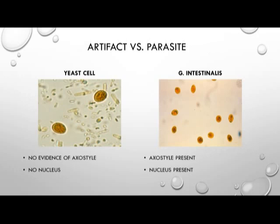To distinguish artifact from parasite: on the left we have a yeast cell — there's no evidence of an axostyle and there's no nucleus. While on the right, we have an axostyle present as well as a nucleus for Giardia intestinalis, or Giardia lamblia.